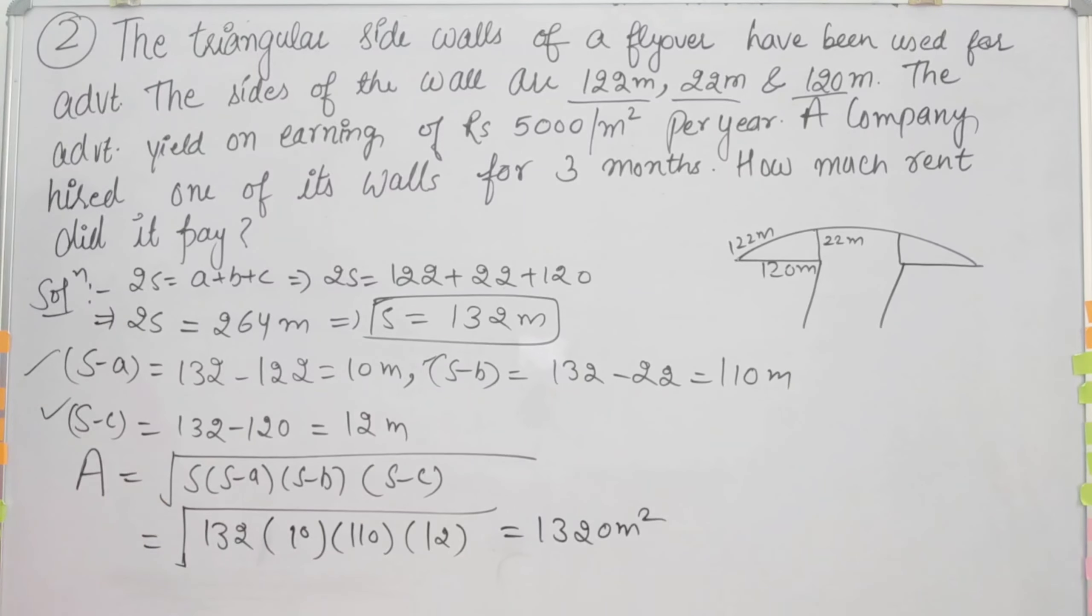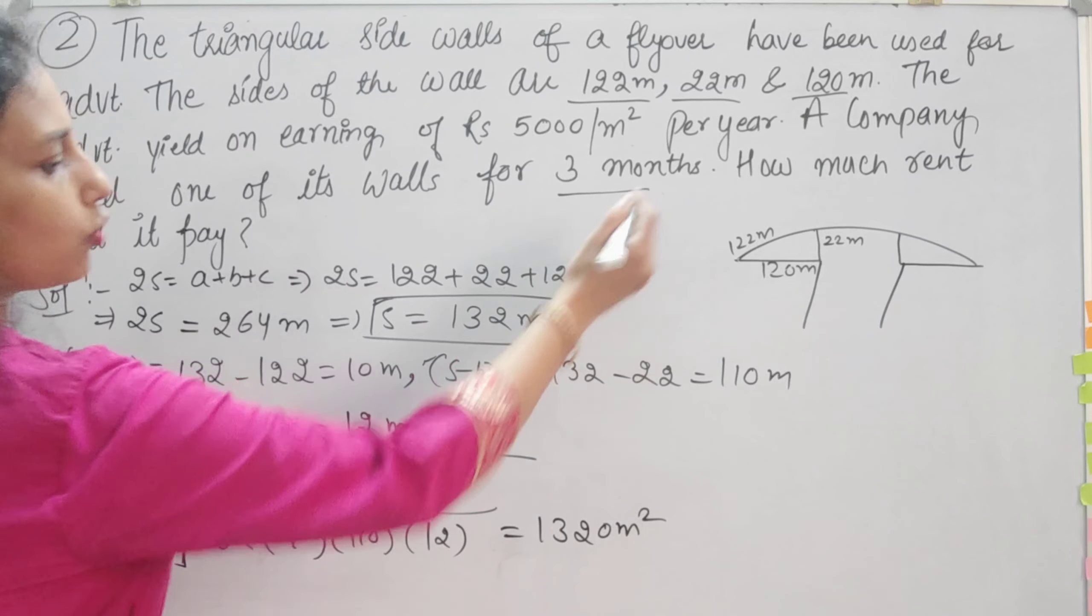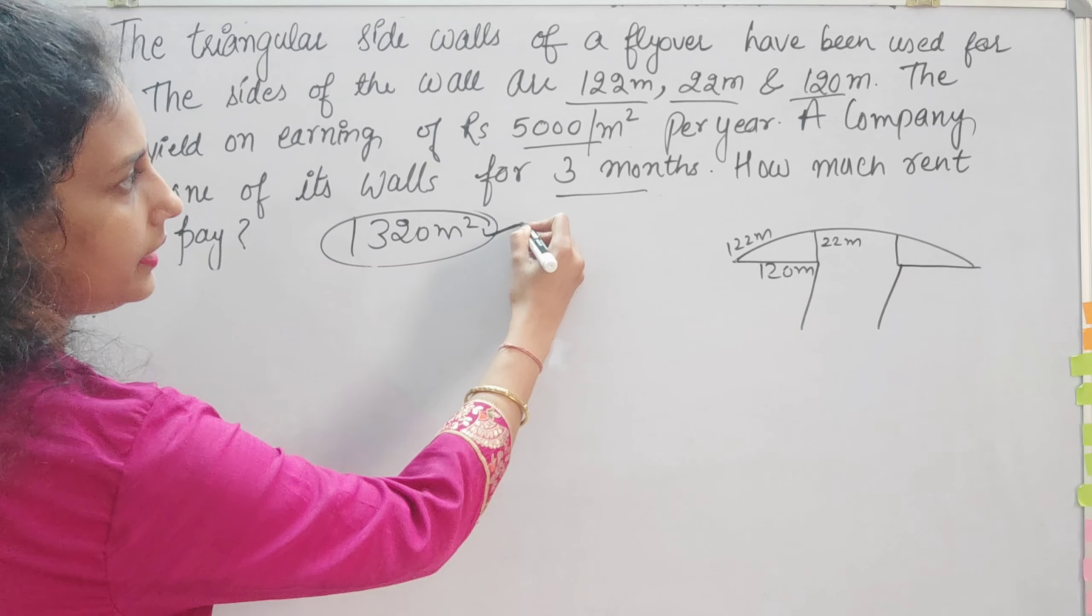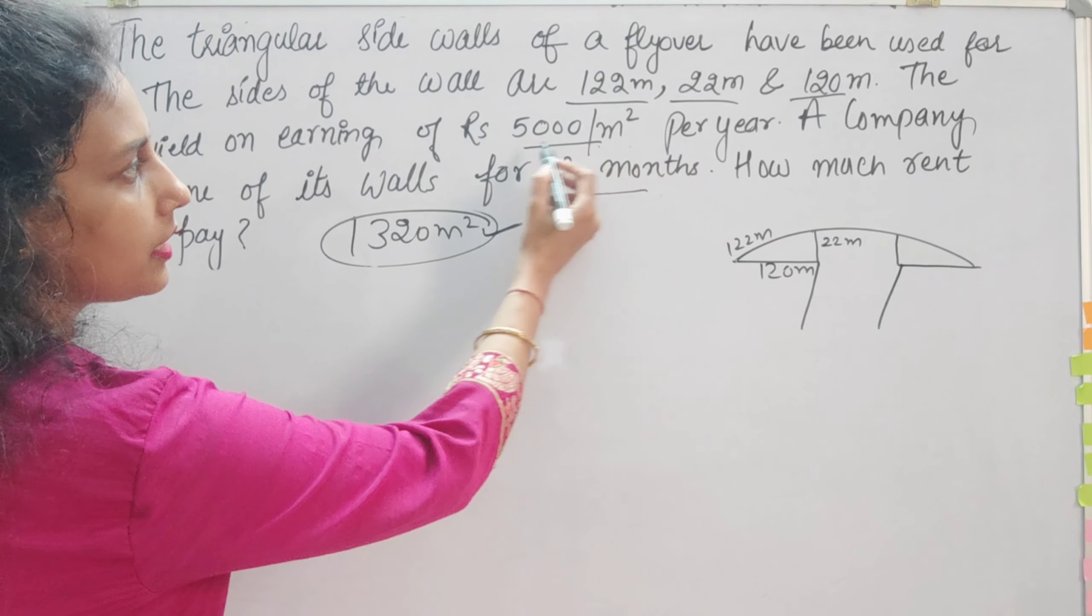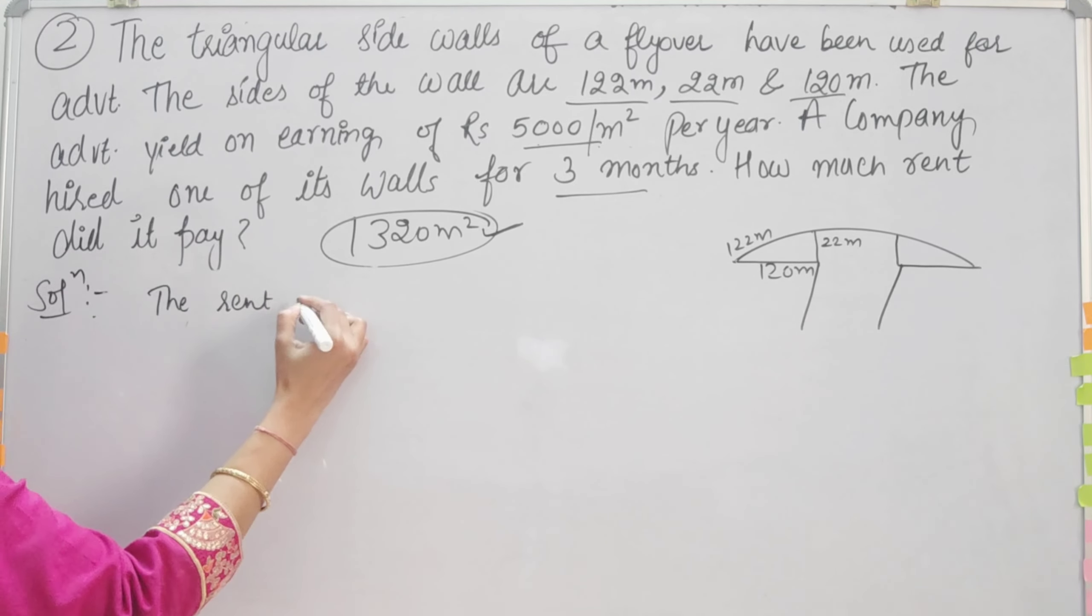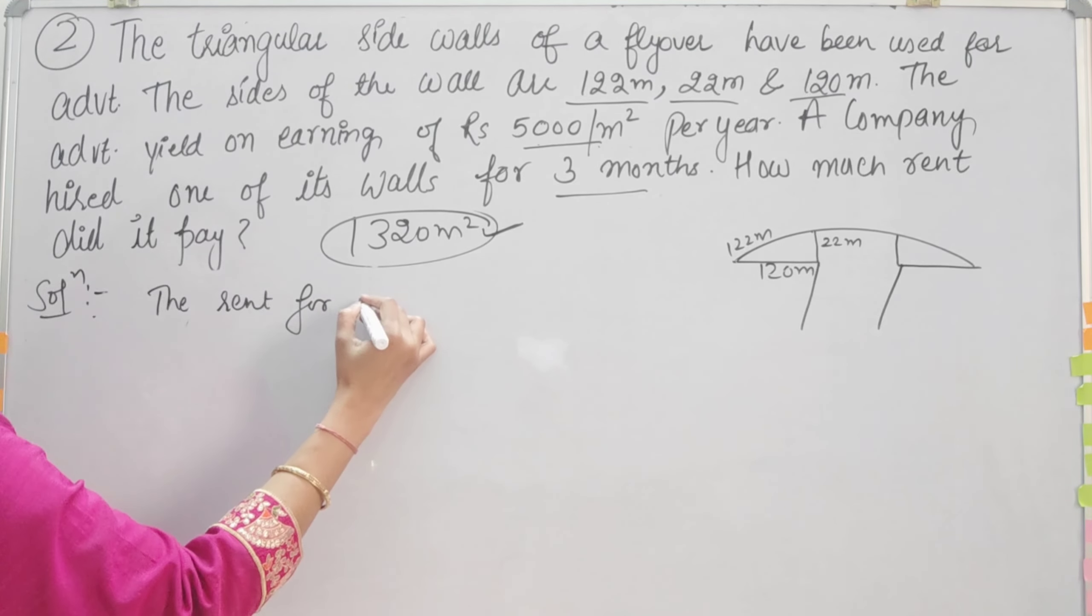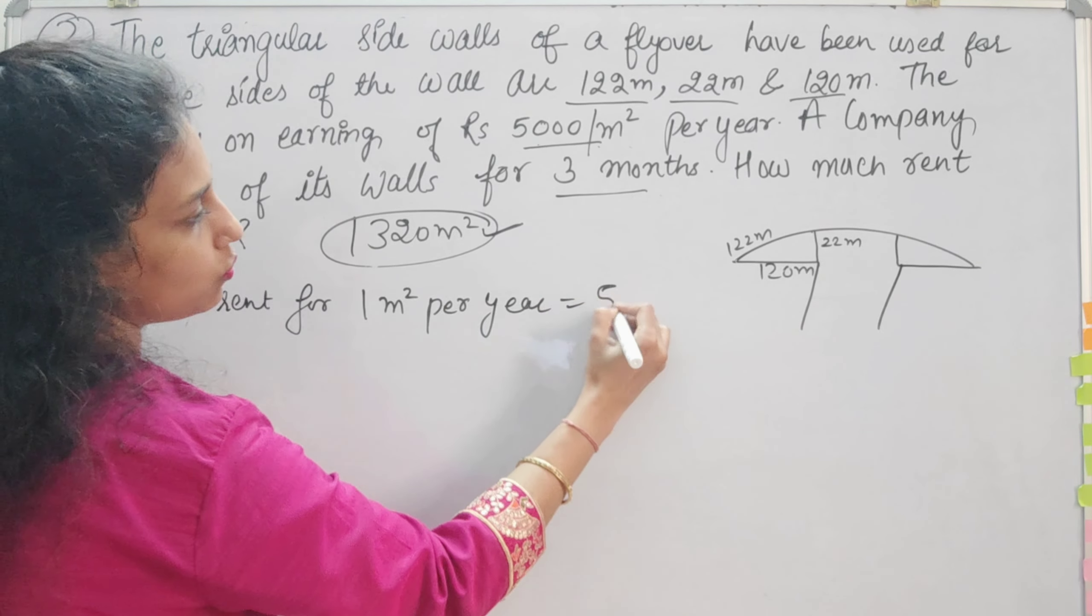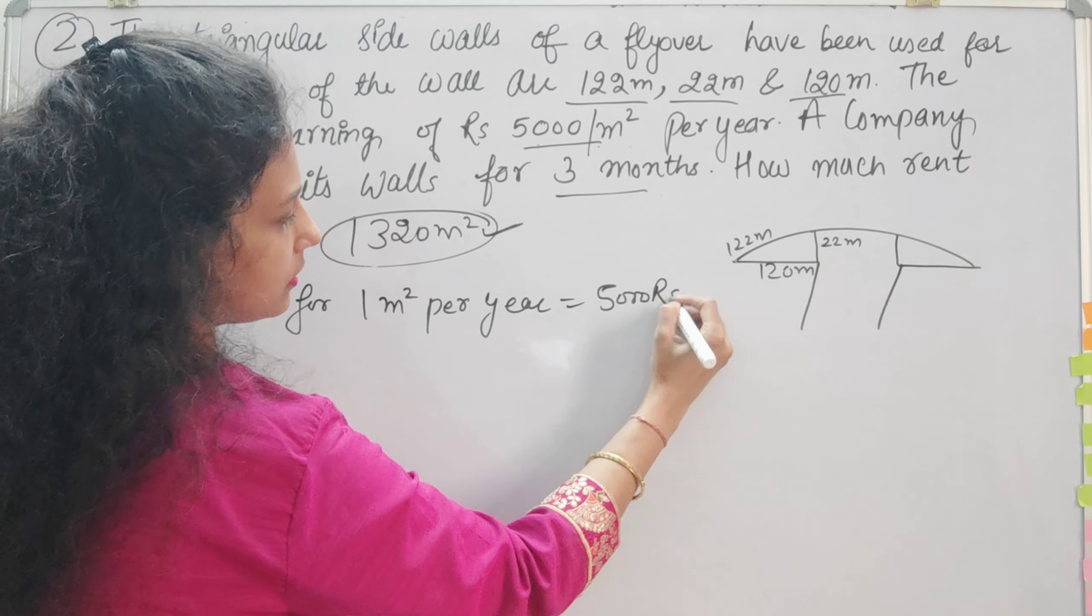Now we have to find out the rent for 3 months. The area of our triangle is 1,320 meter square. The rent for 1 meter square per year is equal to 5,000 rupees.